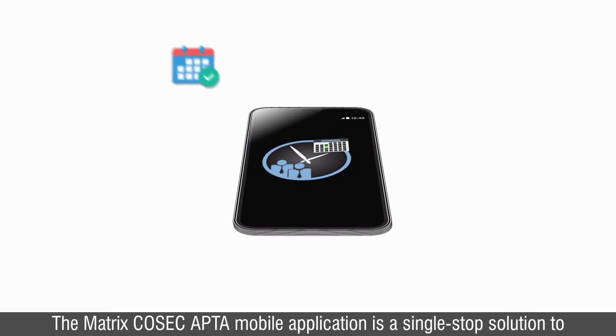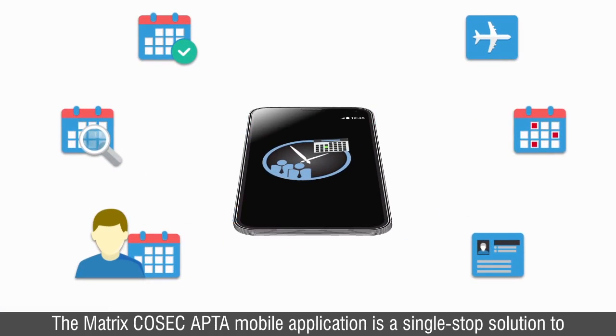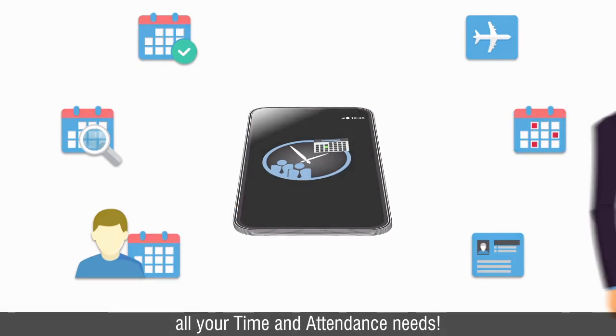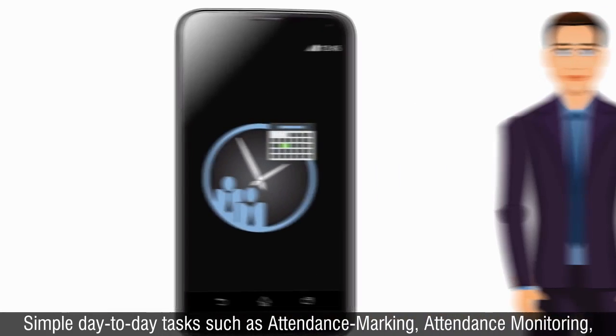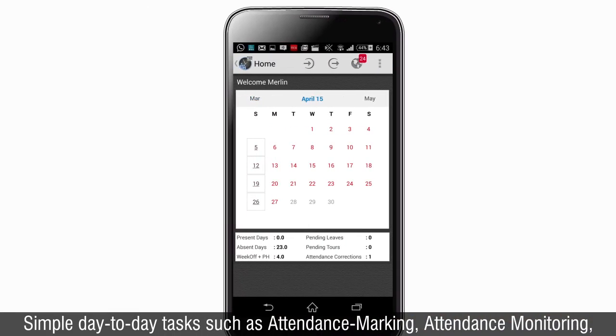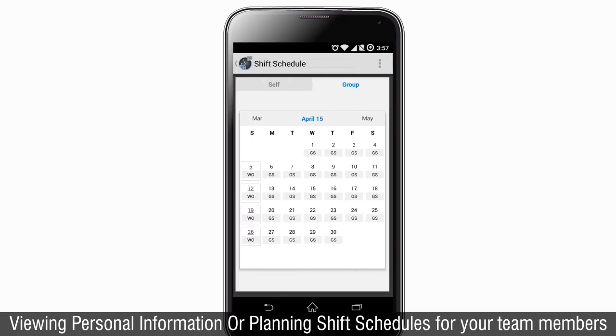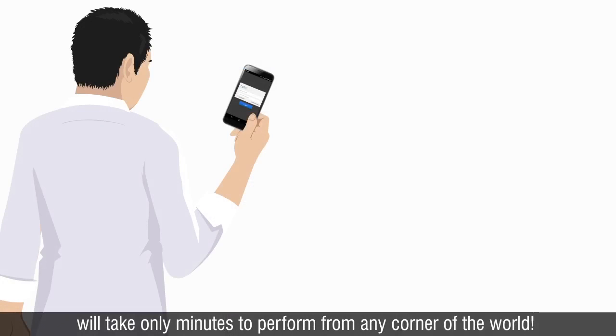The Matrix Cosec Apta mobile application is a single-stop solution to all your time and attendance needs. Simple day-to-day tasks such as attendance marking, attendance monitoring, viewing personal information, or planning shift schedules for your team members will take only minutes to perform from any corner of the world.